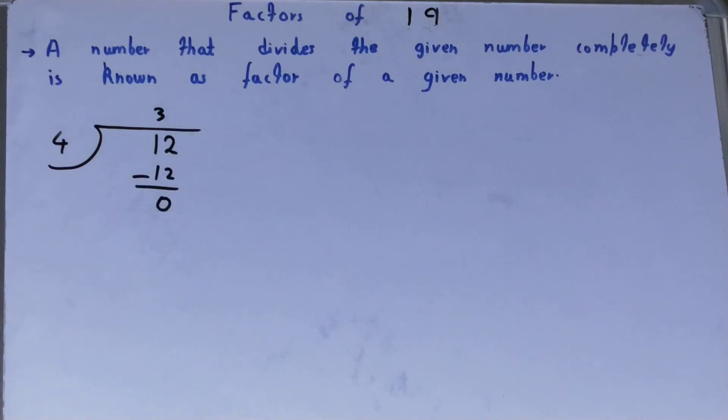If you get the last remainder as zero, then you can say that number is a factor of the given number, or in this case, 4 is a factor of 12.